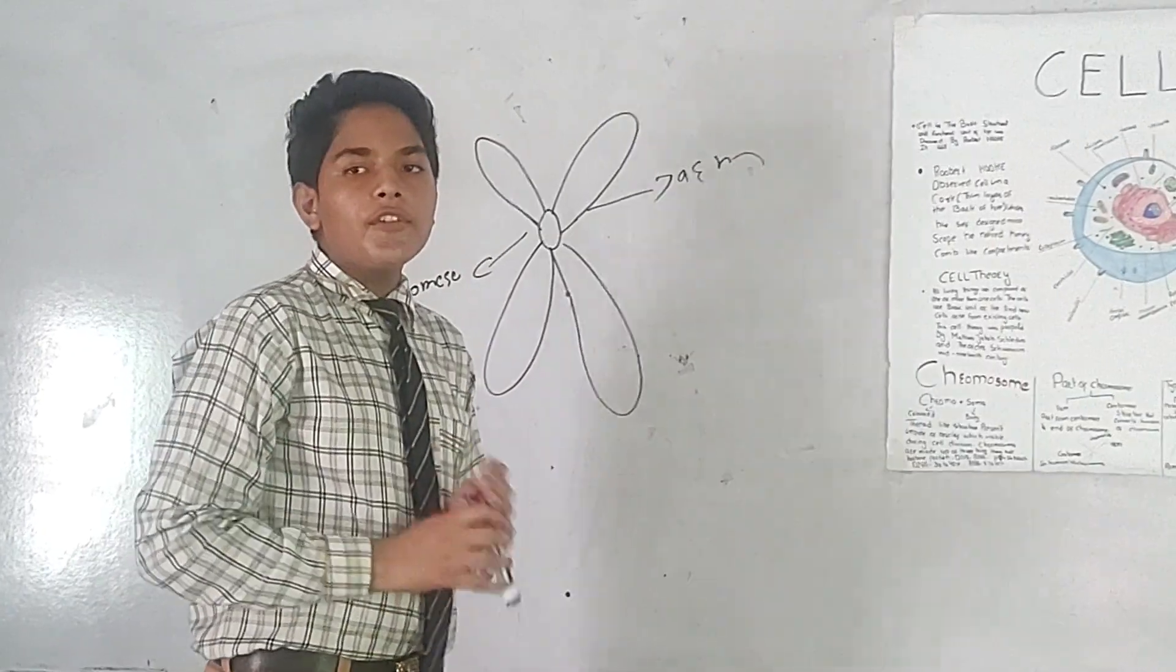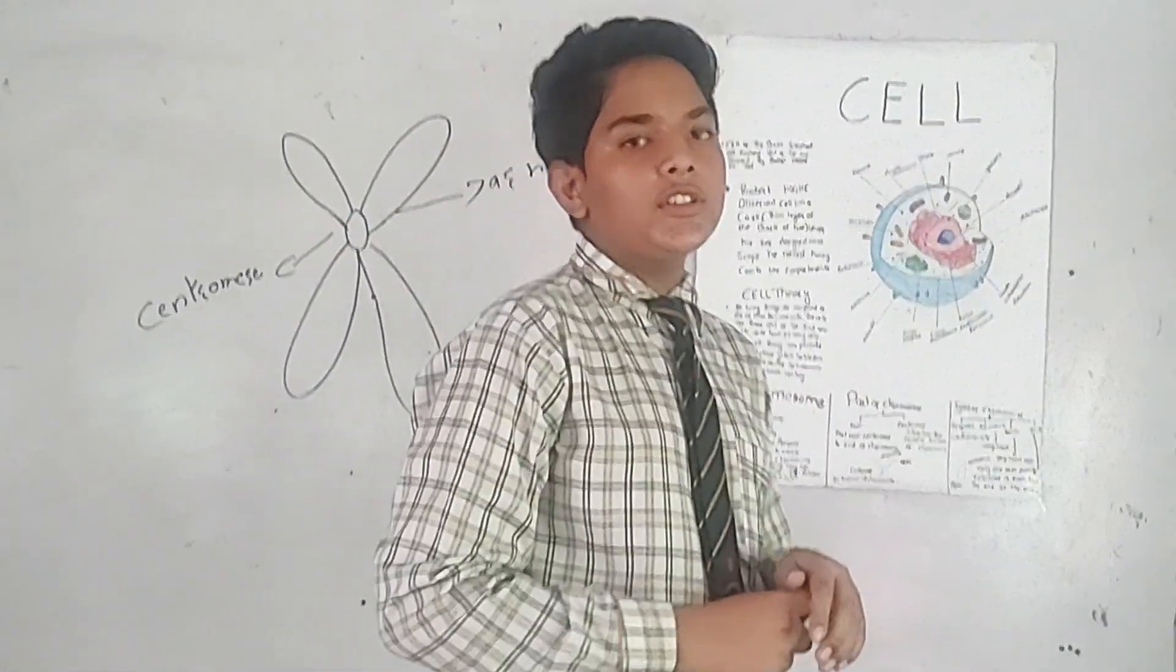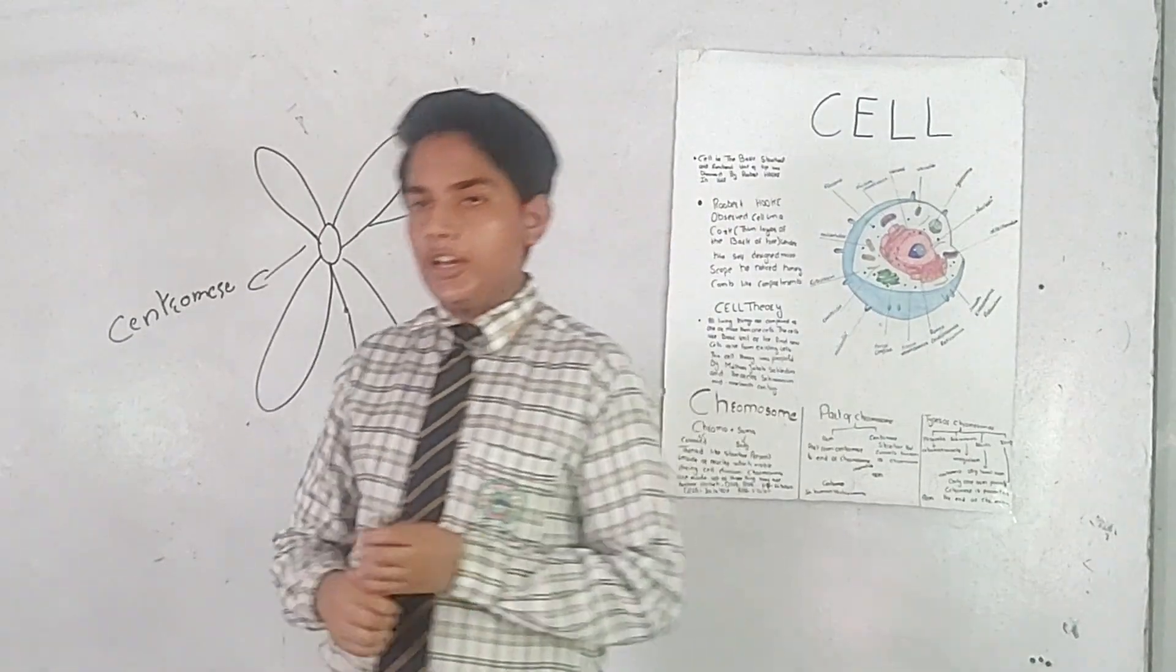Types of chromosomes: There are four types of chromosomes. Metacentric, Submetacentric, Acrocentric or Subtelocentric, and Telocentric.